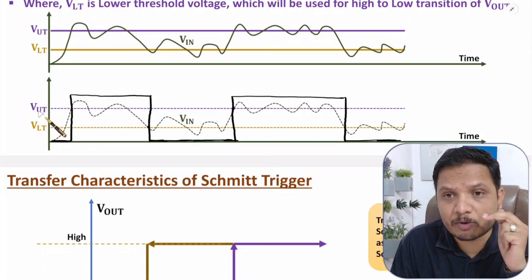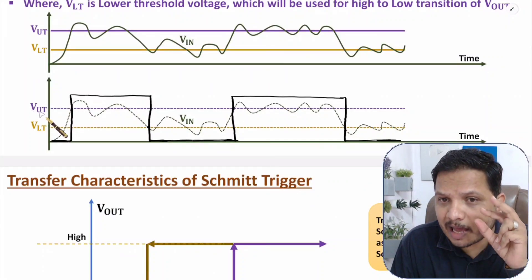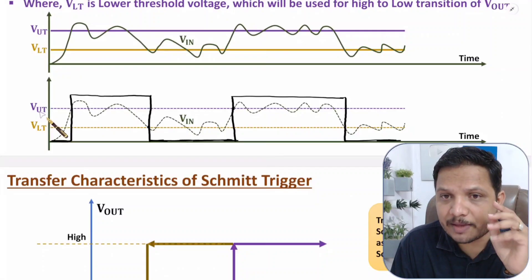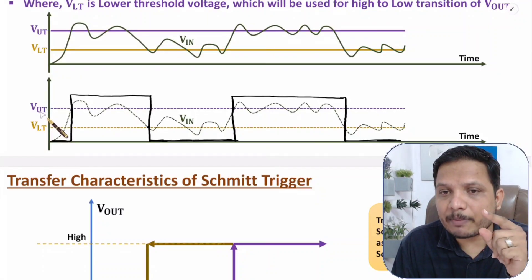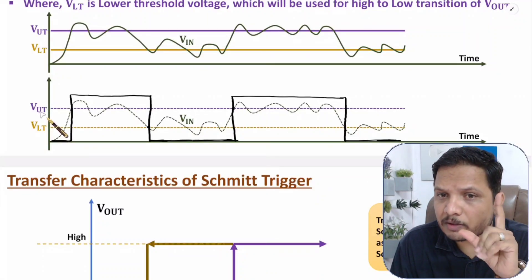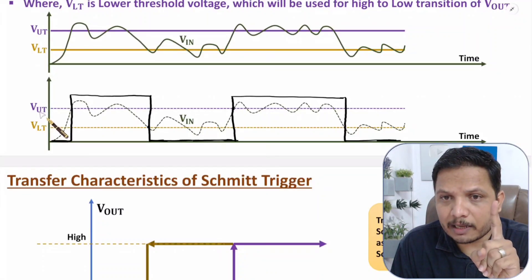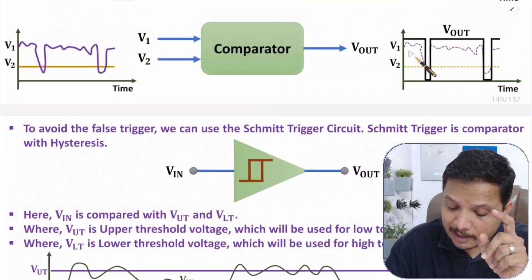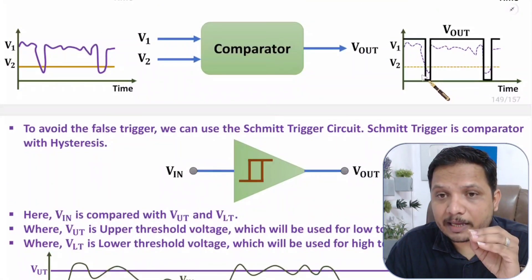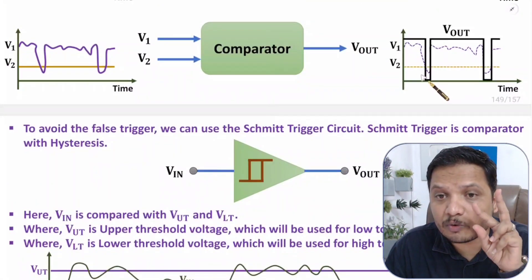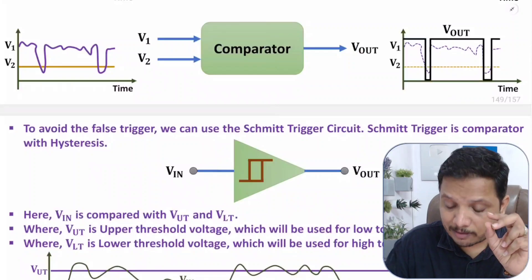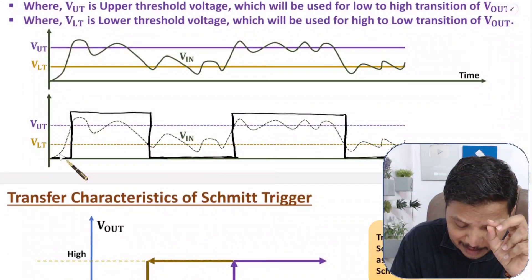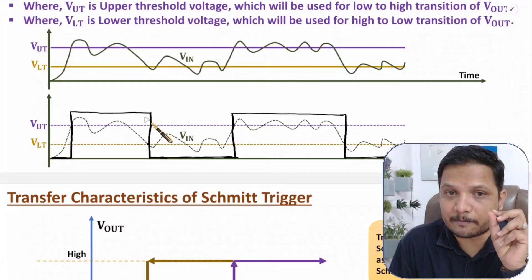Hysteresis means having two different voltage reference levels. Previously we were comparing the input signal with only one reference, which caused false triggering. Now we compare the signal with two different voltage reference levels, so we have very few false triggers.